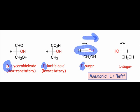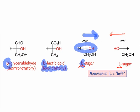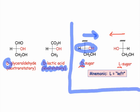When the hydroxyl group on this stereocenter is pointing to the right, we call the sugar D. When that hydroxyl group points to the left, we call the sugar L. As you can see for D-lactic acid, these letters are independent of whether the compound in question rotates light in a dextro- or levorotatory way. As we move to longer sugars, it's important to keep in mind that the D and L designations refer only to this bottom-most stereocenter.